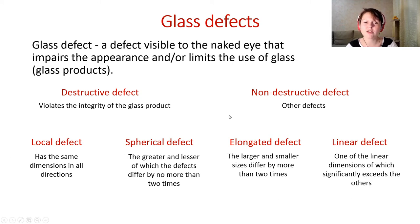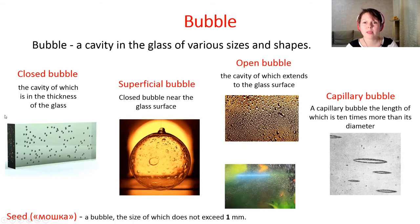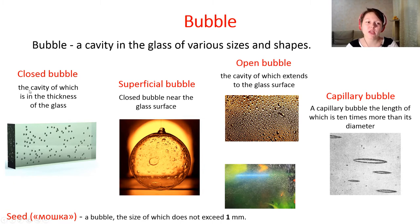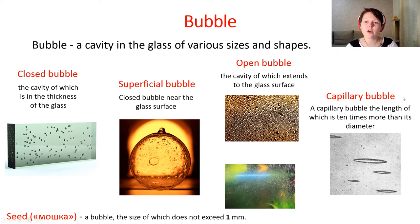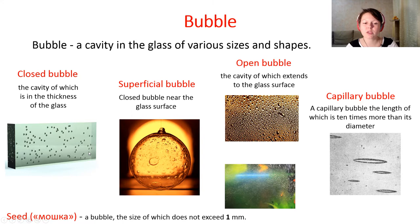The first well-known defect is the bubble — a cavity in glass of various sizes and shapes. We have closed bubbles situated in the glass volume, superficial bubbles close to the glass surface, and open bubbles whose cavity is open to the glass surface. We also have capillary bubbles and seed bubbles (called 'mashka' in Russian), which are bubbles with a size not exceeding one millimeter.